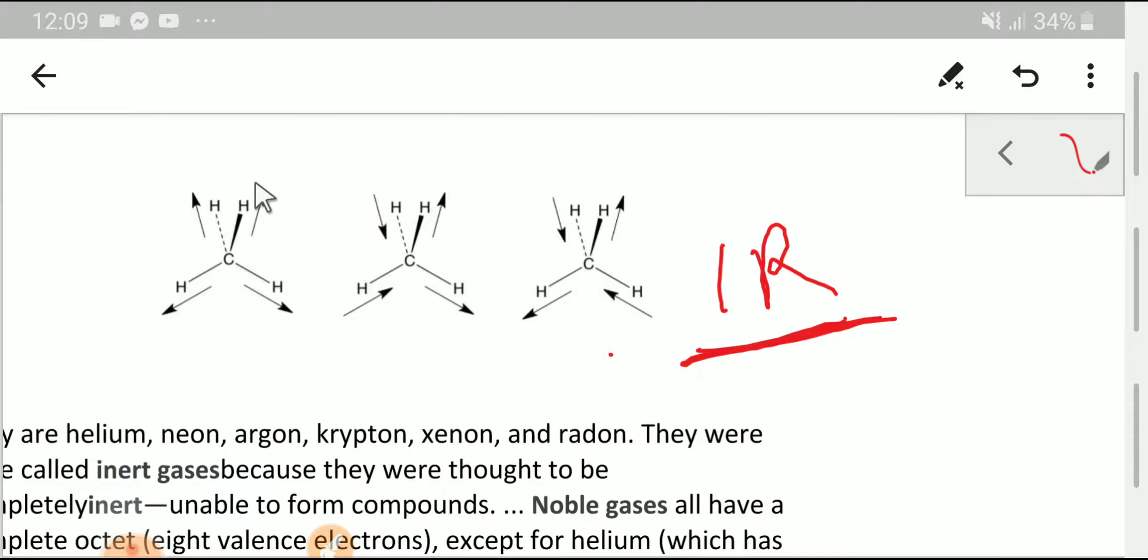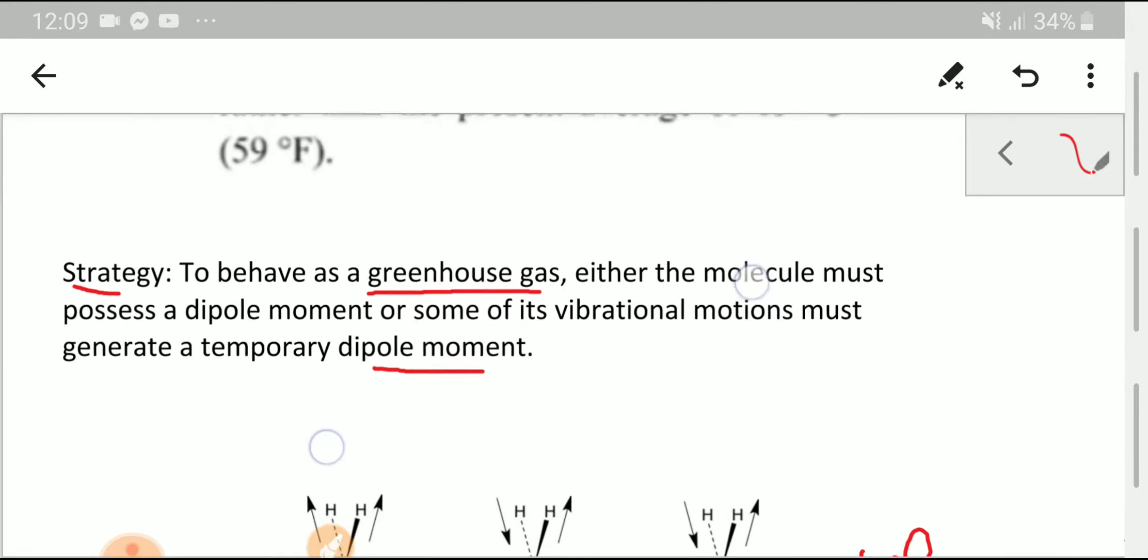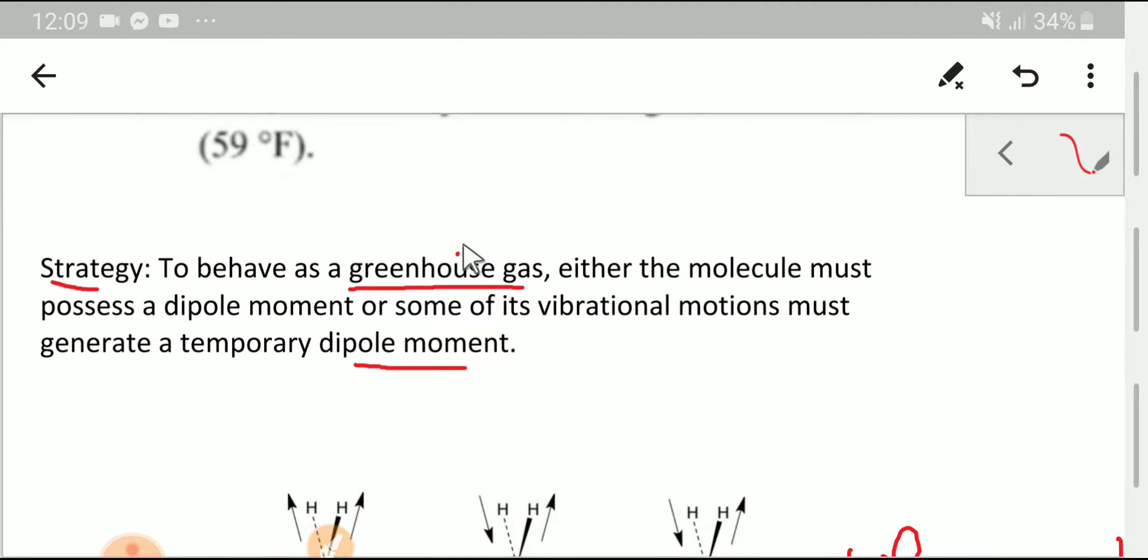Since bond length is changing, dipole moment will be changed. As a result, methane is an IR active molecule. That is, IR active means methane is a greenhouse gas.